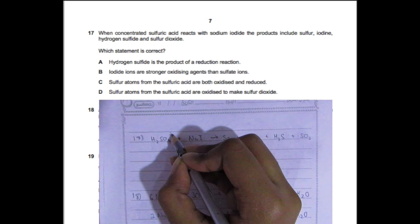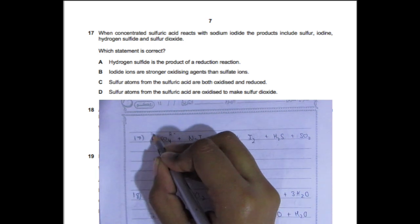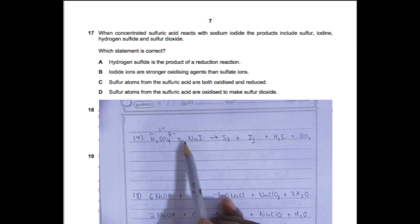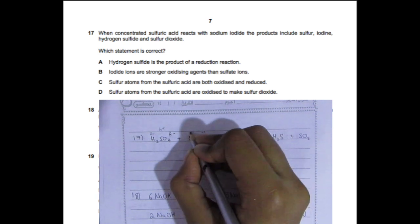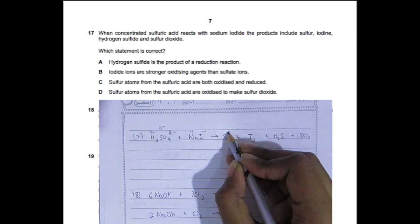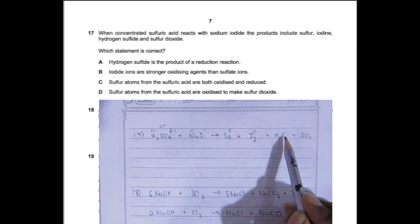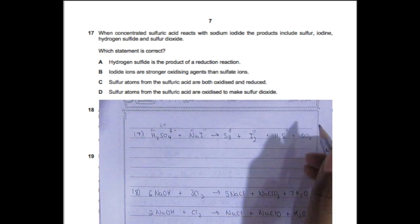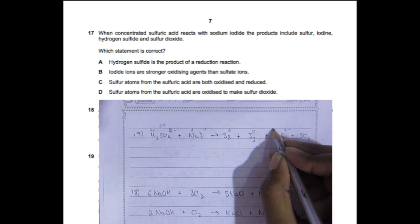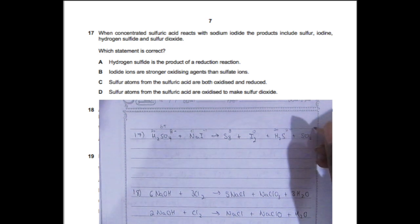Question 17: When concentrated sulfuric acid reacts with sodium iodide, the products include sulfur, iodine, hydrogen sulfide, and sulfur dioxide. Which statement is correct? The first statement is correct. If you write out the oxidation states: hydrogen sulfide is part of a reduction reaction. Sulfur in sulfuric acid has an oxidation state of 6+, and in hydrogen sulfide it's 2−.